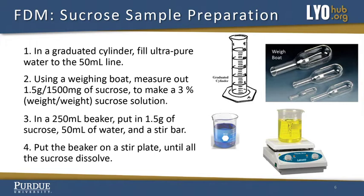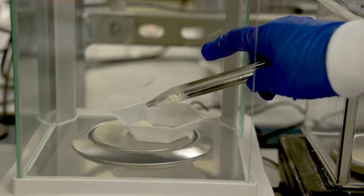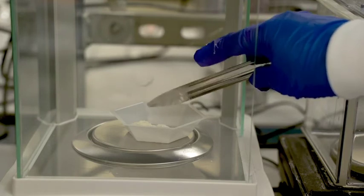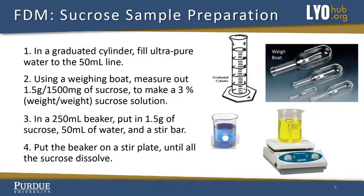Using a weighing boat, measure out 1.5 grams of sucrose to make a 3% weight sucrose solution.